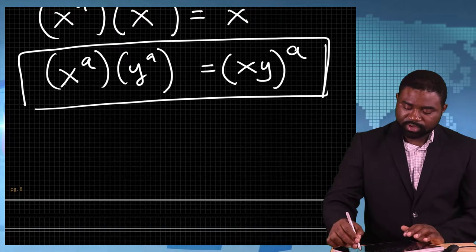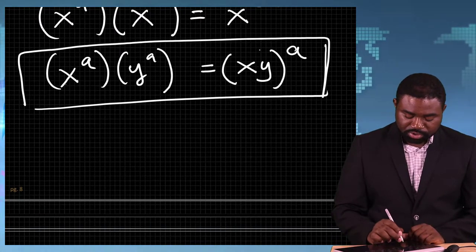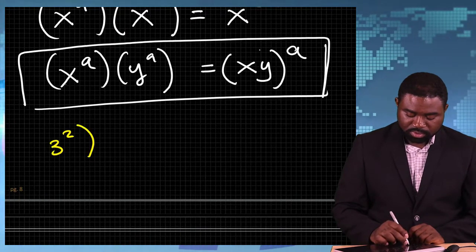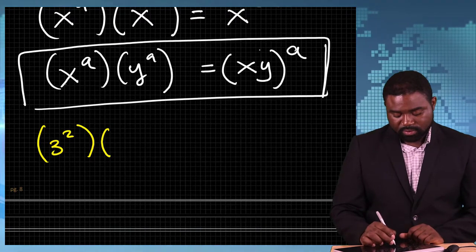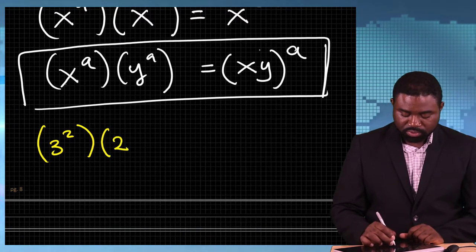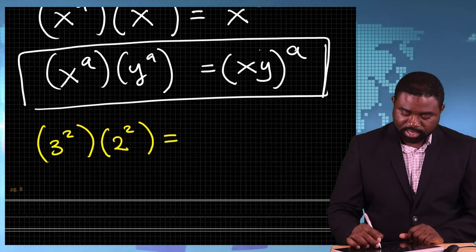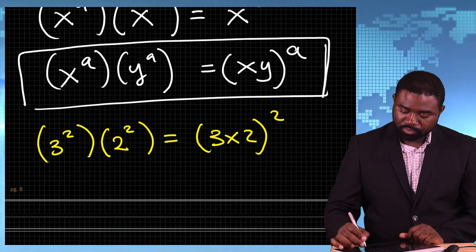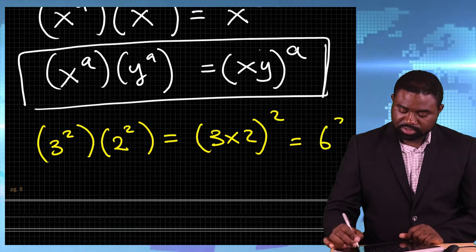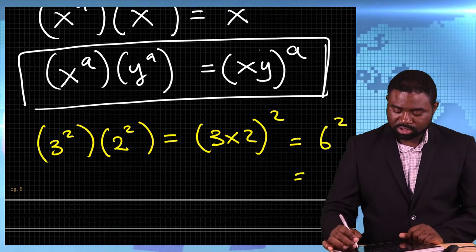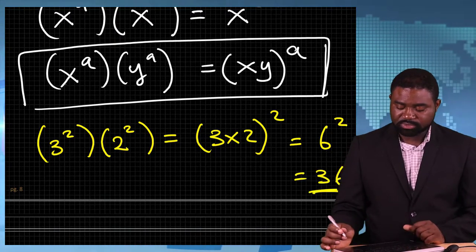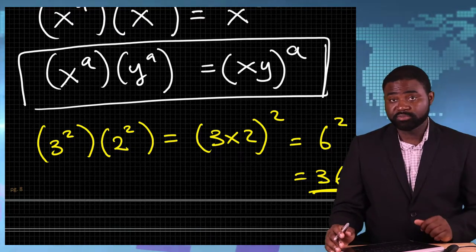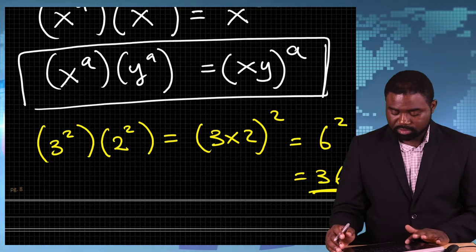Let me give you an example. Suppose you have 3 raised to the power 2, multiplied by 2 raised to the power 2. This is the same as 3 multiplied by 2, raised to the power 2, which is equal to 6 raised to the power 2, which is just 36, because 6 times 6 gives us 36. It's an incredible way to simplify algebraic expressions.